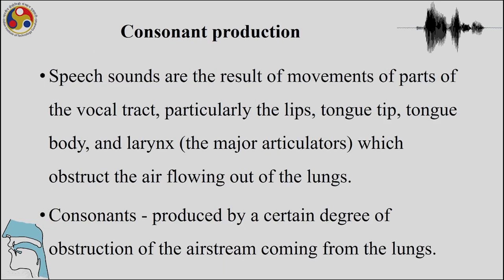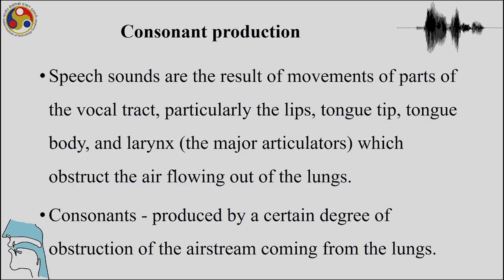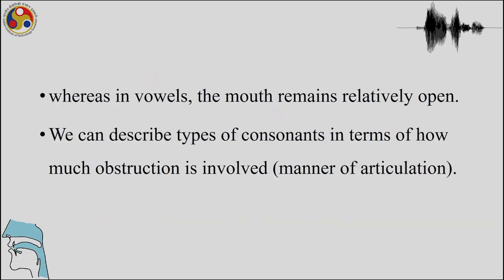In place of articulation, the parts that play a role in sound production include the lips, the tongue tip, the tongue blade, and the tongue body — all playing different roles while producing speech. The larynx is another important articulator that obstructs the air flowing out of the lungs. Vowels are different because they are always relatively open, whereas we can describe types of consonants in terms of how much obstruction is involved.